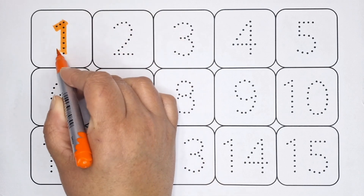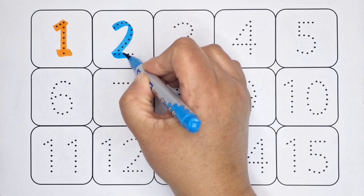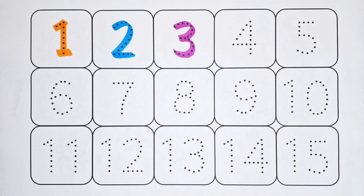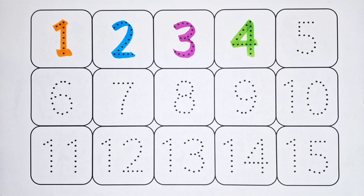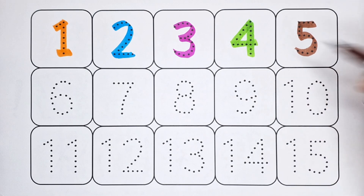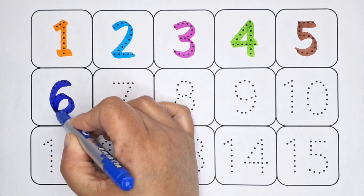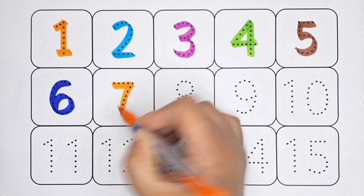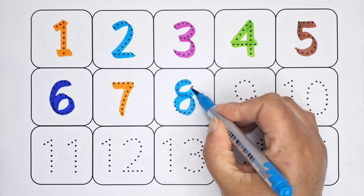1 - this is number 1. 2 - this is number 2. 3 - this is number 3. 4 - this is number 4. 5 - this is number 5. 6 - this is number 6. 7 - this is number 7. 8 - this is number 8.